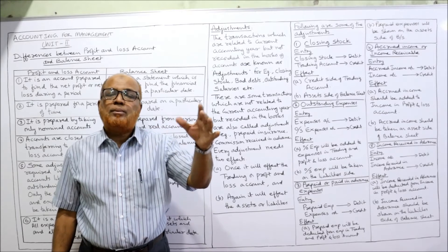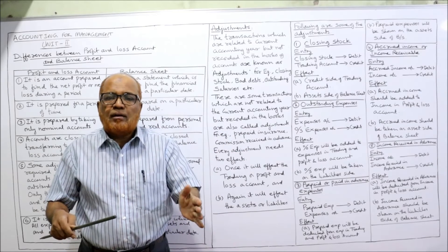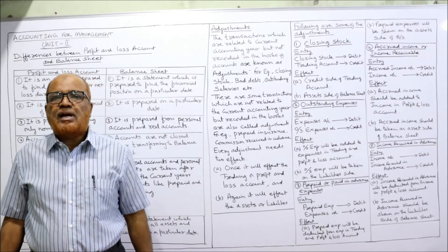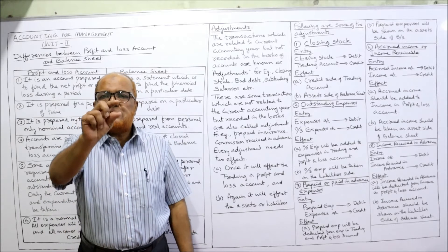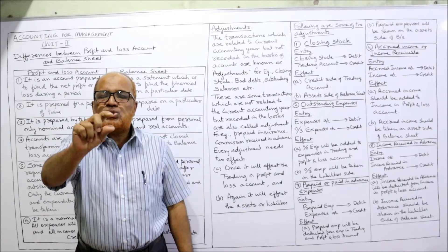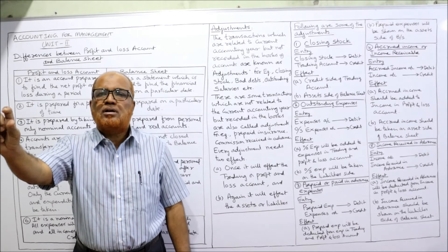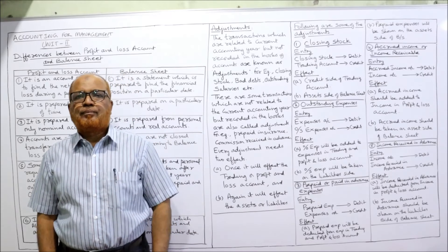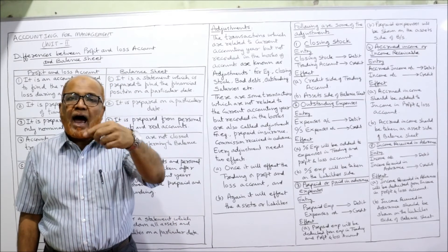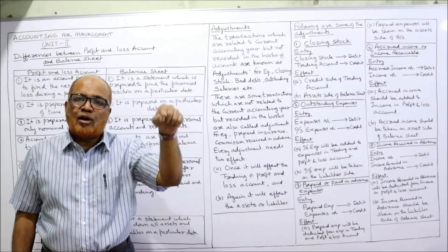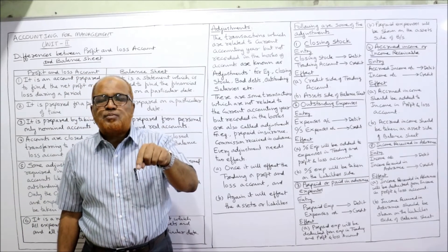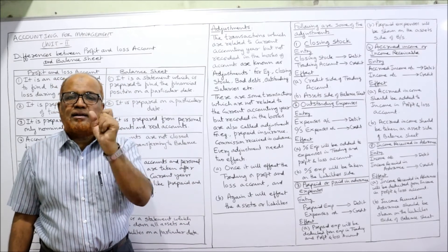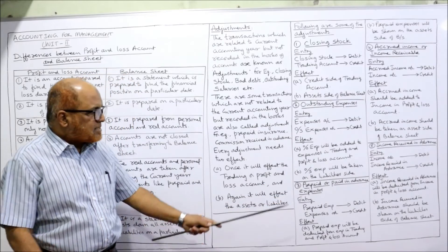Next, outstanding expenses — a frequently appearing adjustment. Outstanding salaries, outstanding rent, outstanding wages are examples. Outstanding means due but not yet paid for the current year. The entry for outstanding expenses is: Expenses Account debit, Outstanding Expenses Account credit. The effect is: outstanding expenses are added to the expenses in the trading and profit and loss account, and also taken on the liability side of the balance sheet under current liabilities.